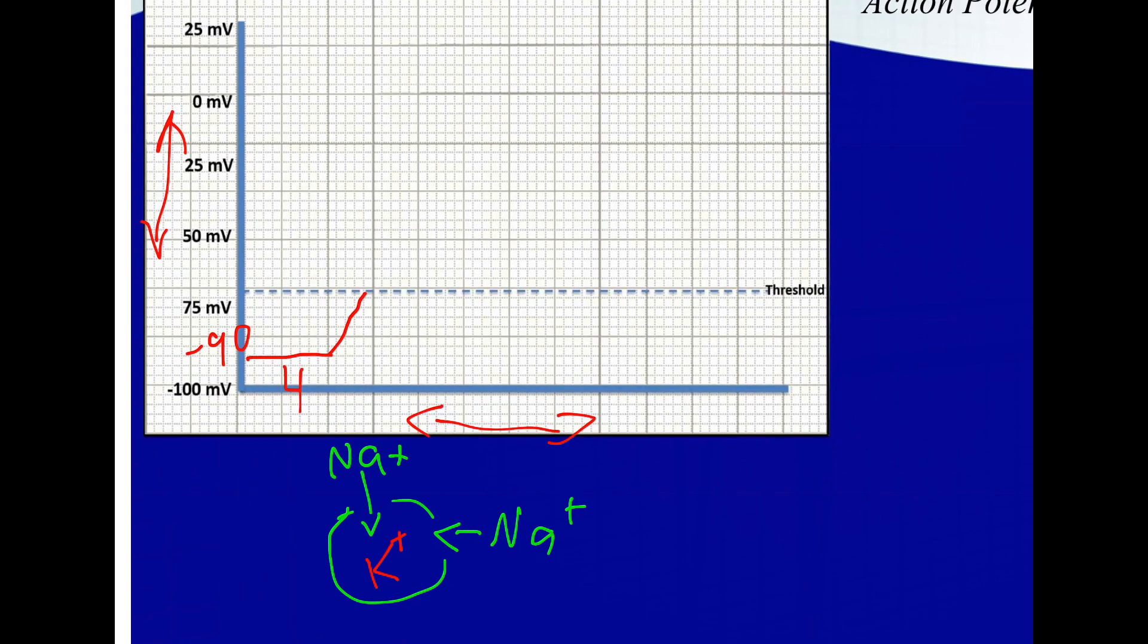Once that threshold is hit, you get a rapid upstroke of cardiac membrane action potential, and it occurs after the rapid voltage gated channels open up. Those voltage gated channels open up right here at that threshold, so there are more channels here where sodium is going to rush in through those.